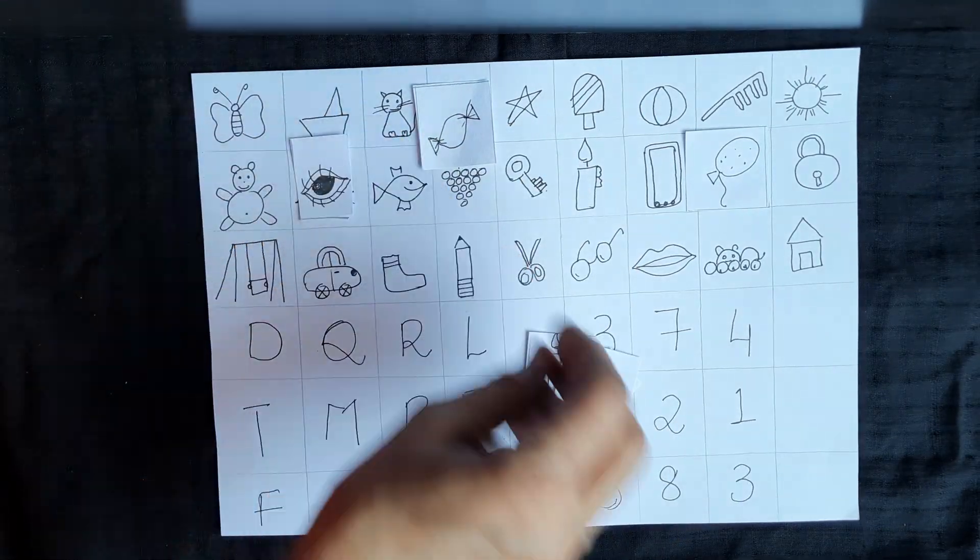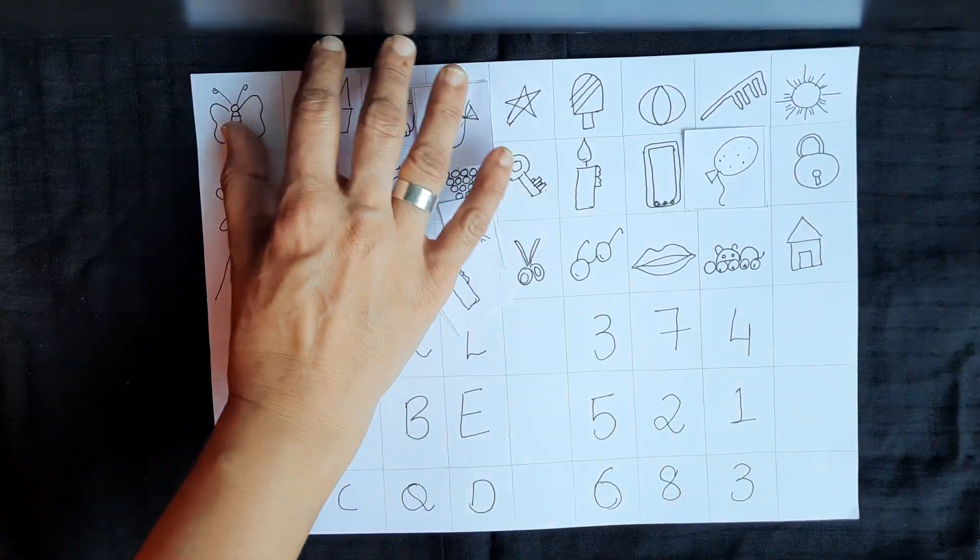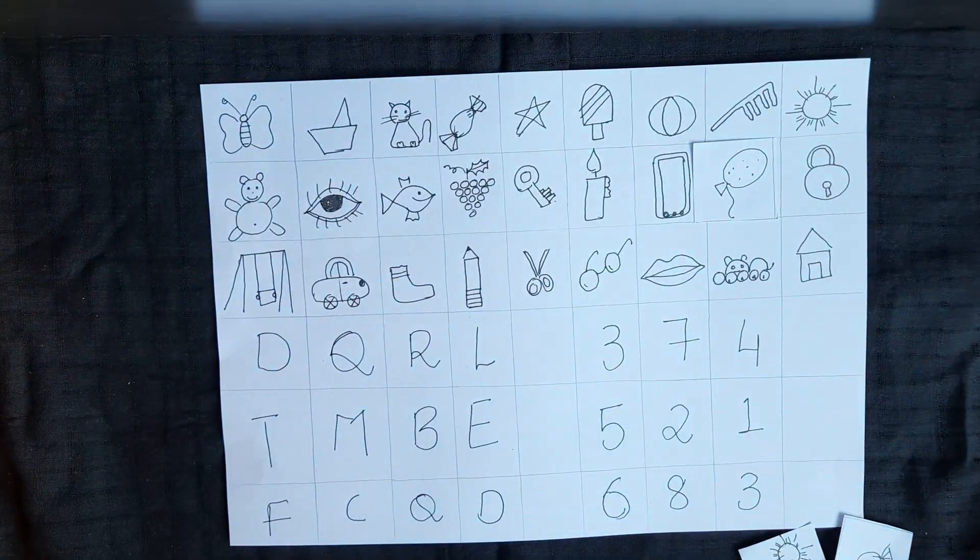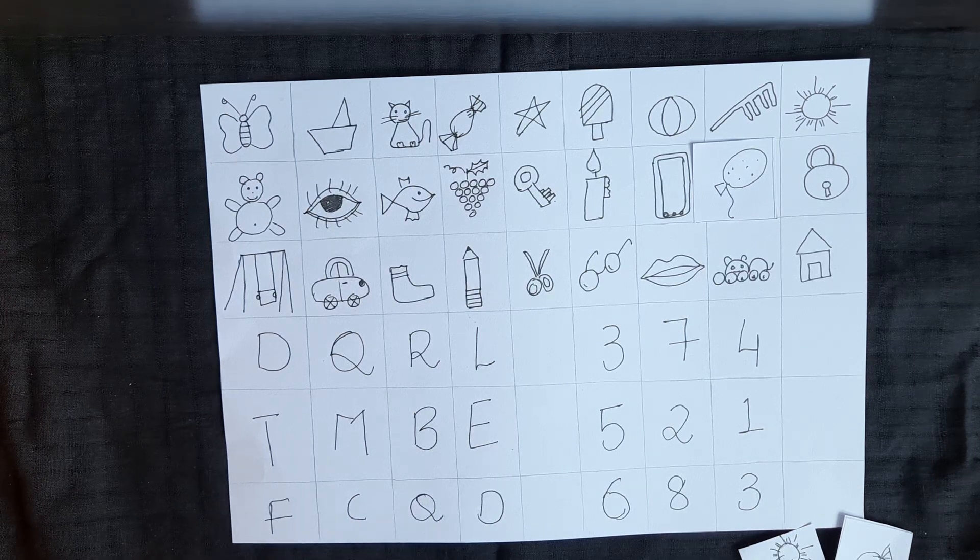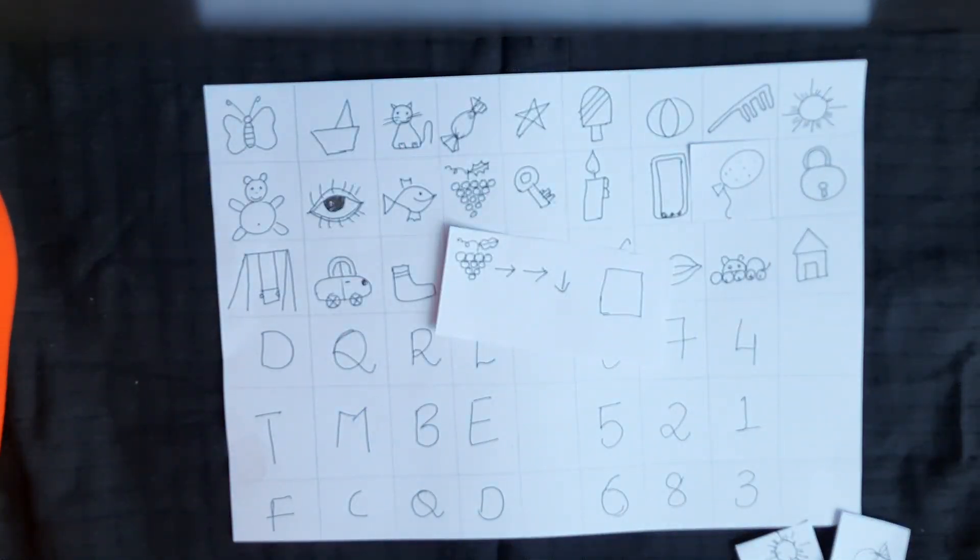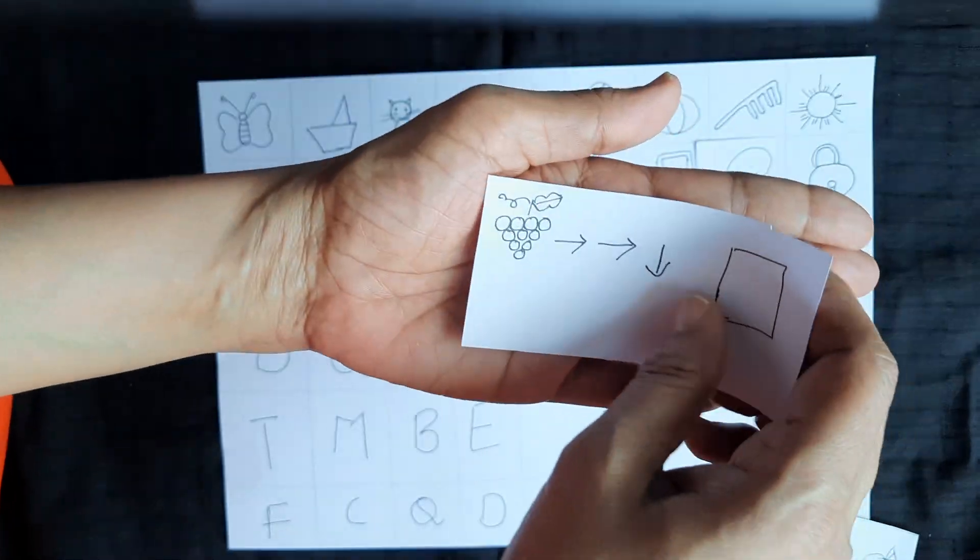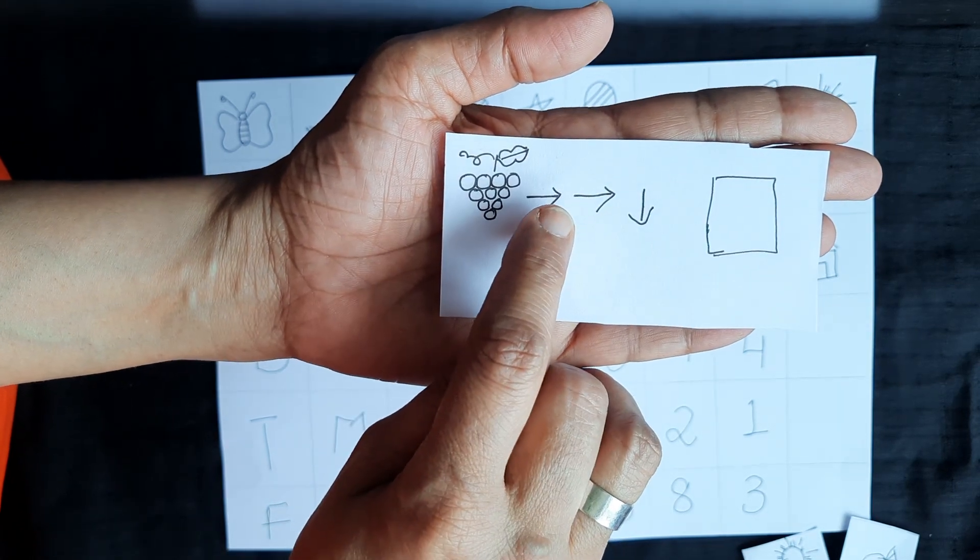What is the next game that you can play? You play a game of directions. You give children cue cards like this. This can become a game wherein everybody sits around and plays. You have a cue card like this. What this card says is you have to start at the grape, then you go right, again you go right, and then you go down.